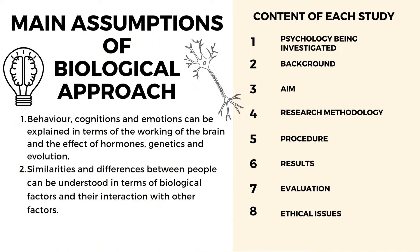For each study — not just Dement and Claytman, but for every study — you're supposed to know eight things: the psychology being investigated, the background, the aim, research methodology, procedure, results, evaluation, and ethical issues.